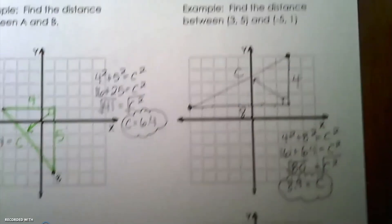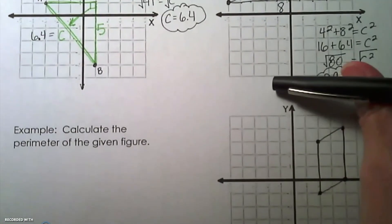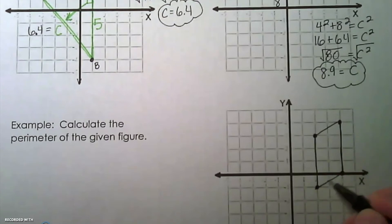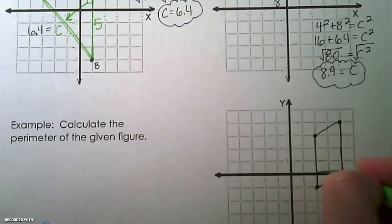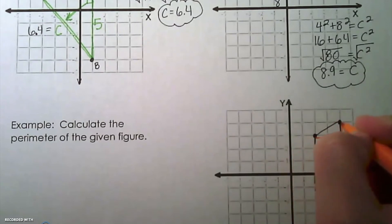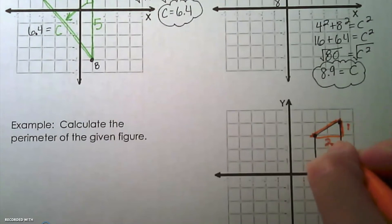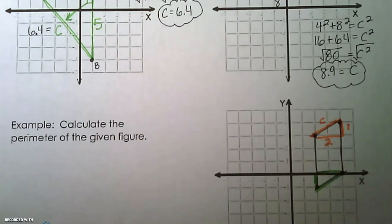Now we're going to calculate the perimeter of the given figure, but we need to solve for the diagonal segments. We break those into right triangles. This is a parallelogram, so the two corner triangles are congruent to each other — we can solve for one and double that value. Working with the orange triangle, this segment is 1 and this segment is 2, and we're solving for the hypotenuse.